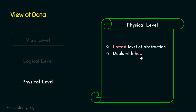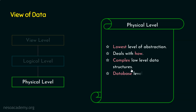The physical level deals with how the data are stored, and this involves data structures — which may be simple or even complex data structures. Note that this level uses low-level data structures. For example, if we are storing multimedia data in the database, the data structure would be complex. Data are stored in databases which are stored in the storage medium, and that's why this level deals with storage. We are done with the physical level.